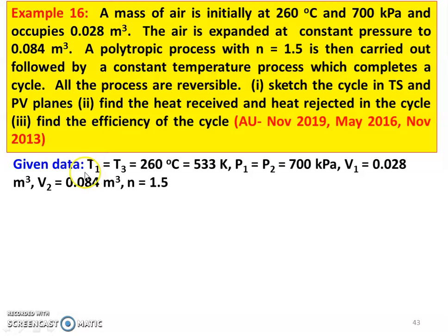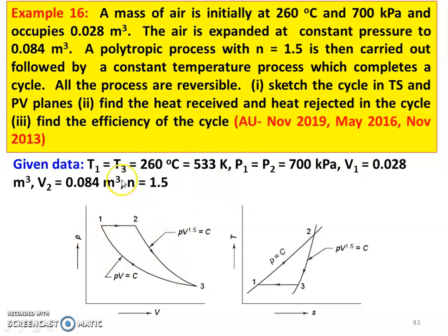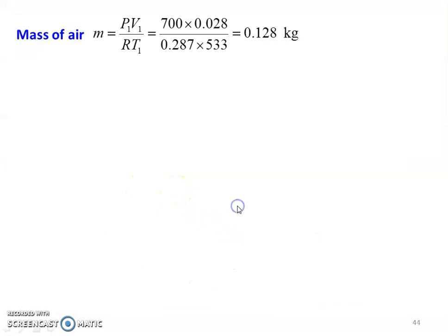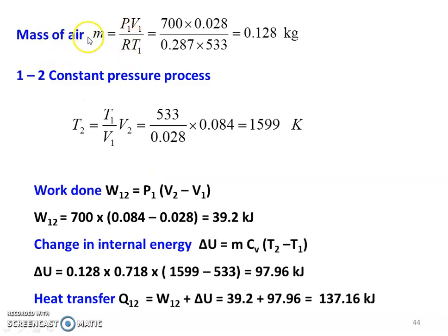Given: T1 = T3 = 260°C = 533 K. First process is constant pressure expansion; second is polytropic expansion; third is isothermal compression. P1 = P2 = 700 kPa, V1 = 0.028 m³, V2 = 0.084 m³, N = 1.5. Mass of air = P1V1/(RT1) = 700 × 0.028 / (0.287 × 533) = 0.128 kg.